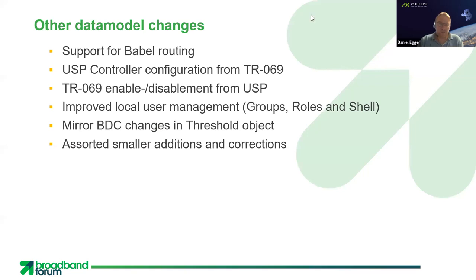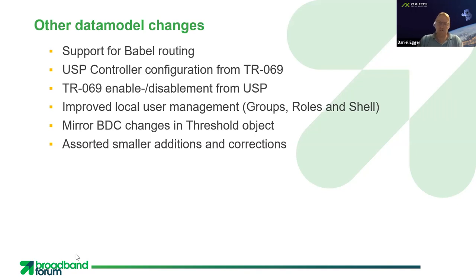Of course, that's not all we did. Among other data model changes: there's the BABEL routing protocol, and we now have full support for configuration and monitoring of that protocol. We also added support for USP controller configuration from TR-69. So if you have a device capable of handling both TR-69 and USP, we now have officially added the capability of setting up a USP controller from TR-69. You can basically migrate from TR-69 to USP, or implement some use cases using USP while still continuing to use TR-69 for provisioning.